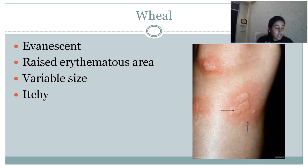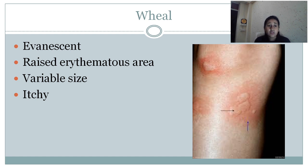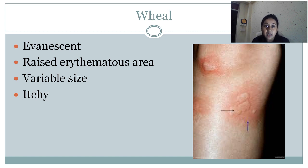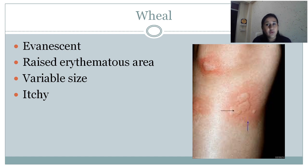The next is wheal. What are wheals? These are evanescent structures — evanescent means the lesion will disappear within 24 hours. They are evanescent, raised, erythematous areas of variable size, and they are associated with itching. These are characteristic features of urticaria. In some cases, these wheals can persist for more than 24 hours — in those cases, the diagnosis can be urticarial vasculitis, where the blood vessels get involved.